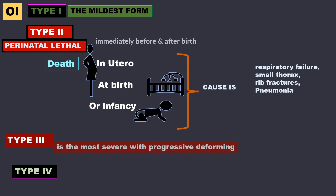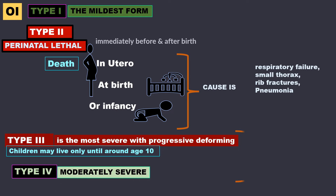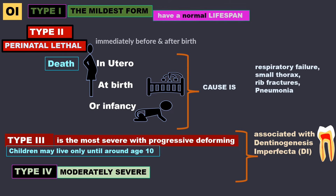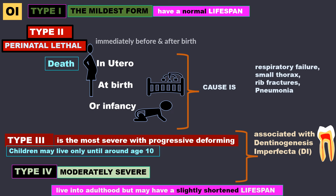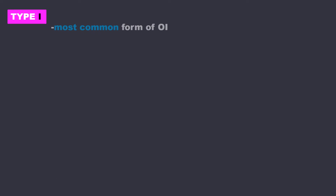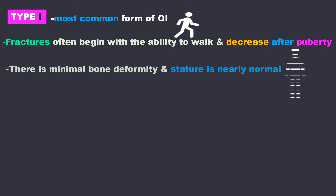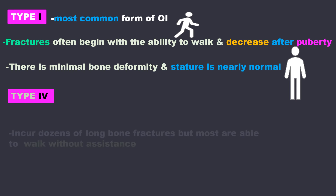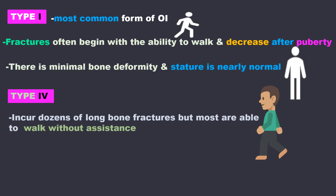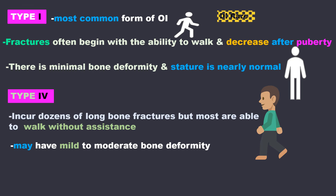Type 3 is the most severe with progressive deforming; children may live only until around age 10. Type 4 is moderately severe. Both Types 3 and 4 are associated with dentinogenesis imperfecta. People with Type 1 have a normal lifespan, while those with Type 4 live until adulthood but may have a slightly shortened lifespan. Type 1 is the most common form of OI, with minimal bone deformity and nearly normal stature. In Type 4, dozens of long bone fractures can occur, though most patients are able to walk without assistance. Dentinogenesis imperfecta is rare in Type 1 but always associated with Type 4.